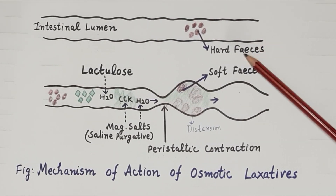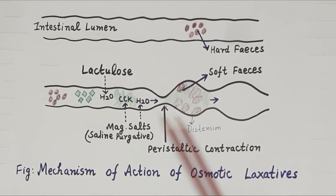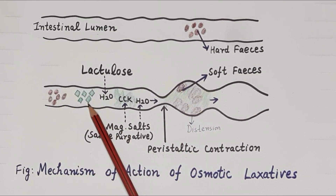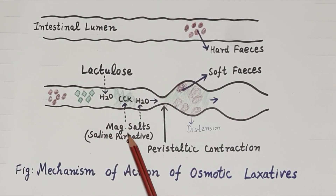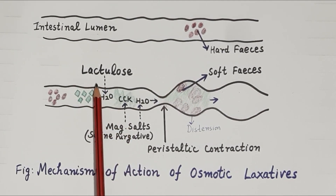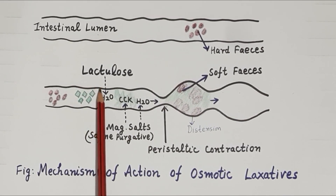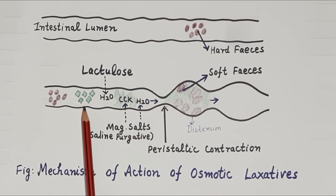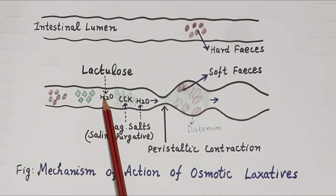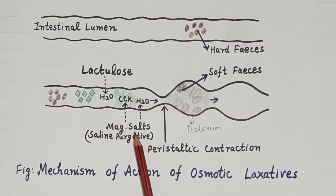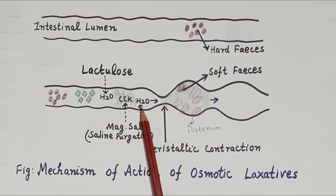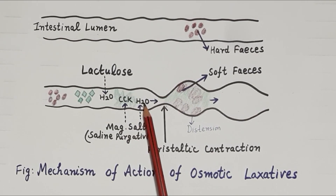Looking at this figure, it shows a constipated intestinal lumen with hard feces, and also shows the lumen with osmotic agents in green, for example lactulose or magnesium salts. Lactulose is neither digested nor absorbed, and therefore remains intact in the intestinal lumen, pulling water from surrounding tissues into the lumen by osmosis. Magnesium salts, also termed saline purgatives, like magnesium sulfate and magnesium hydroxide, also pull water into the intestinal lumen by osmosis.